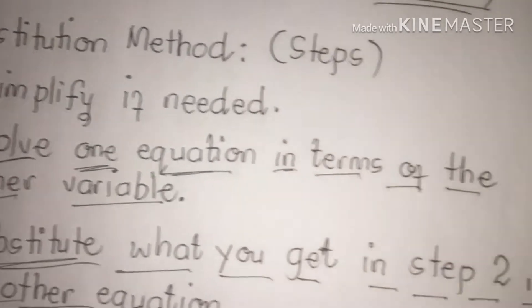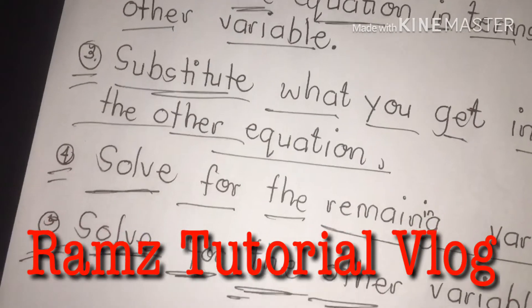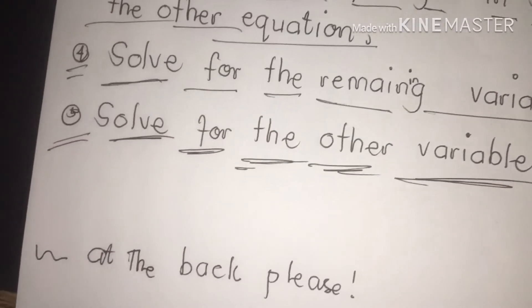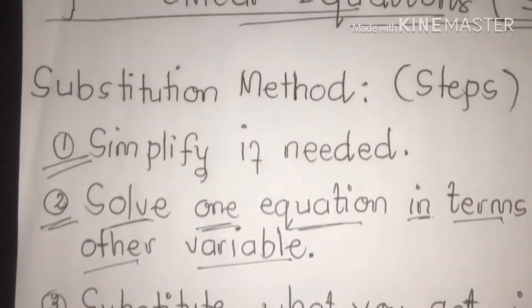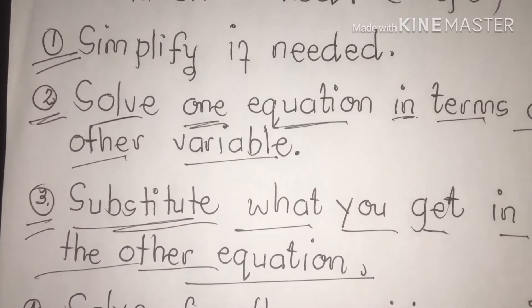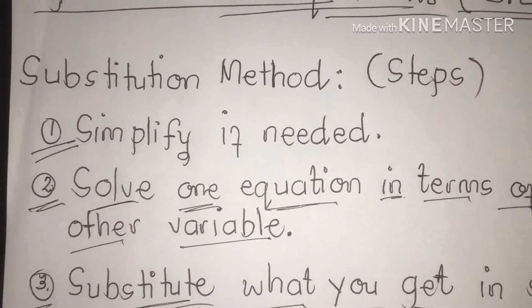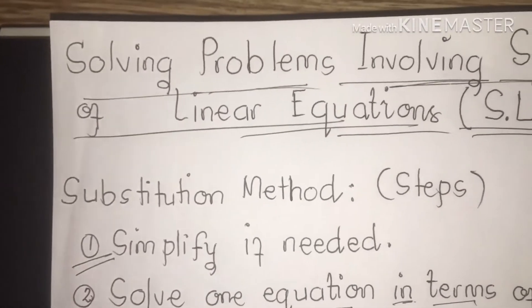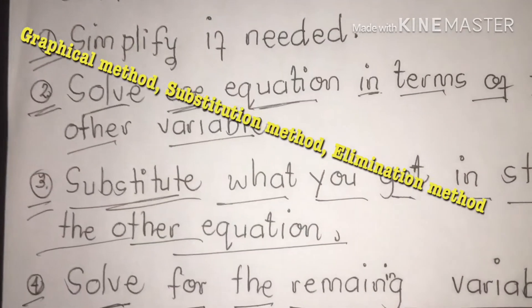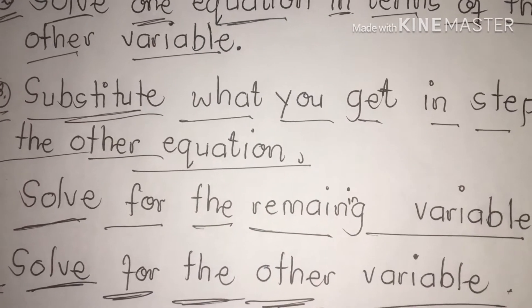And that is what we call, or those are the substitution method or process wherein you can solve SLE or system of linear equations. There are three ways to solve system of linear equations: graphical method, substitution method, and elimination method. But for me, I'm going to show you how the substitution method process happens.